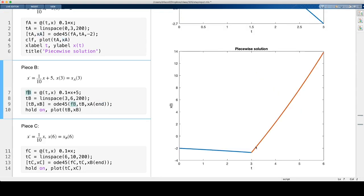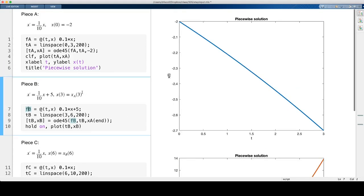And when I look at the solution, it's continuous as it's supposed to be. But you notice x prime is definitely not continuous.